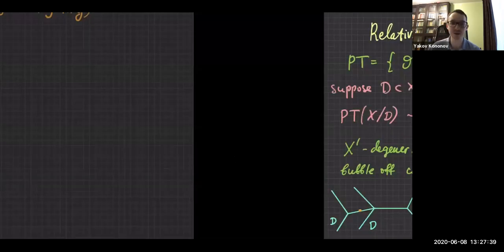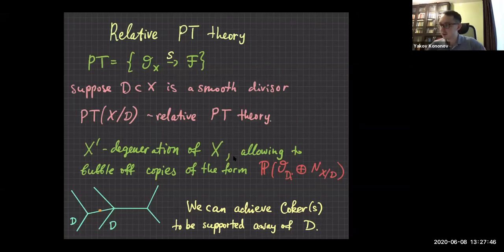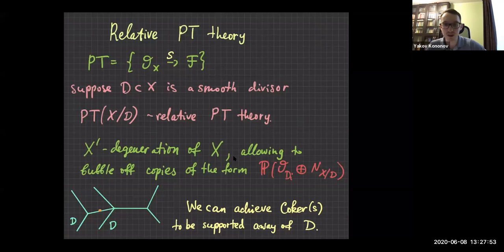Let's discuss relative Pandripanda-Thomas theory. If we have a smooth divisor D in X, then we have relative PT theory, which is a larger moduli space. It allows X to bubble off a copy of the form projectivization of the structure sheaf of D plus the normal bundle to D in X.